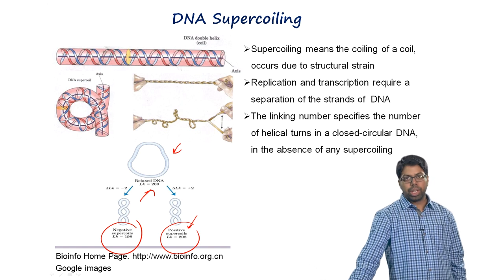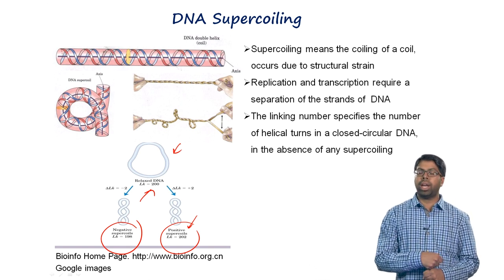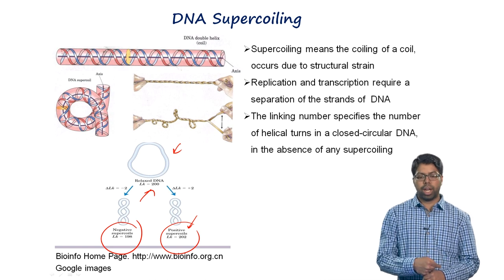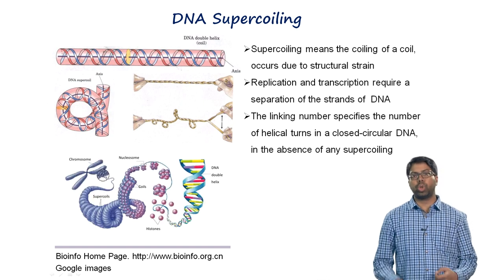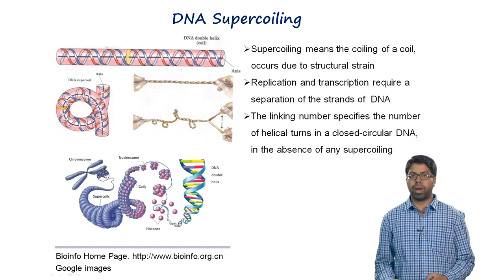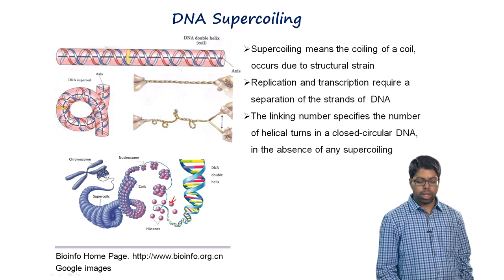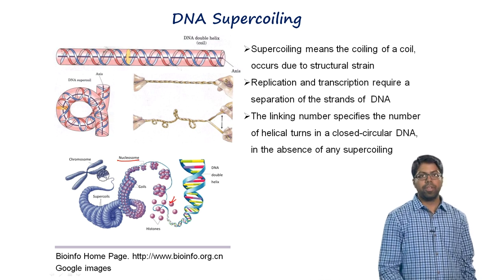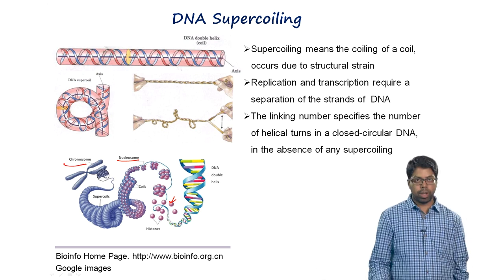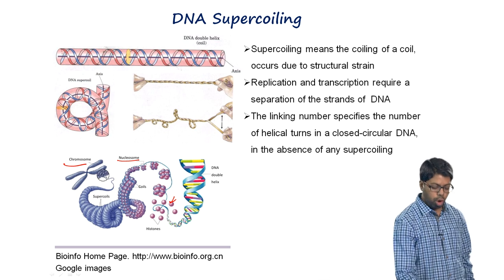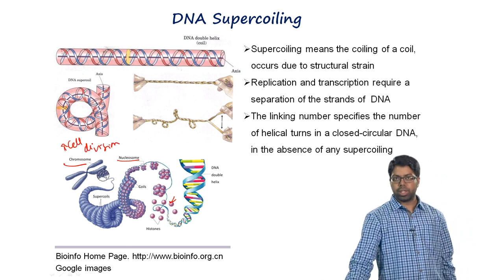Negatively supercoiled DNA can be thought of as removing twist and introducing writhe in the opposite direction. DNA supercoiling is important because it helps DNA get packaged in an organized manner — DNA wraps around histone proteins forming nucleosomes, which are further coiled and supercoiled to give chromatin, which condenses into chromosomes involved in cell division.